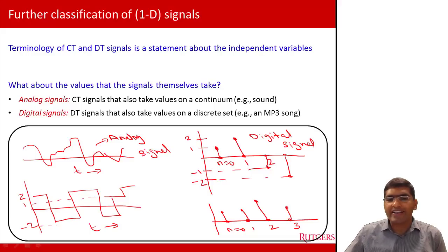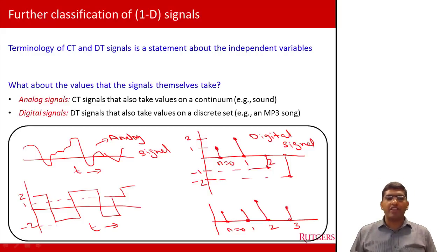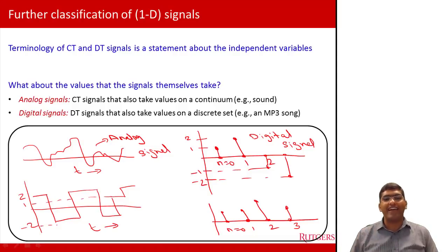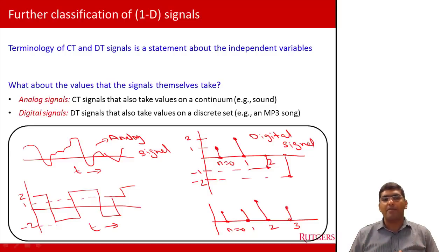So these are the two broad classifications of signals to keep in mind: first, continuous-time vs. discrete-time — where 'time' is just an abstraction — and then within that, whether the values the signals take are on a continuum or a fixed set, giving us analog and digital signals. Signals can also be more than 1D, but at the undergraduate level we focus mainly on 1D and perhaps 2D signals.